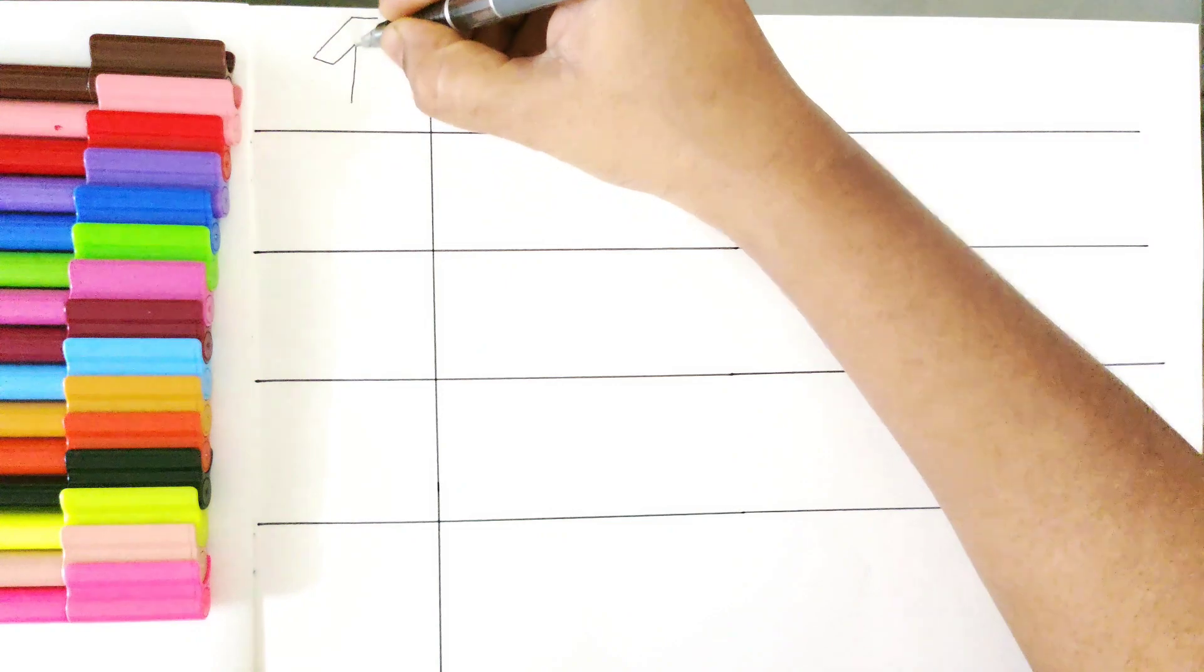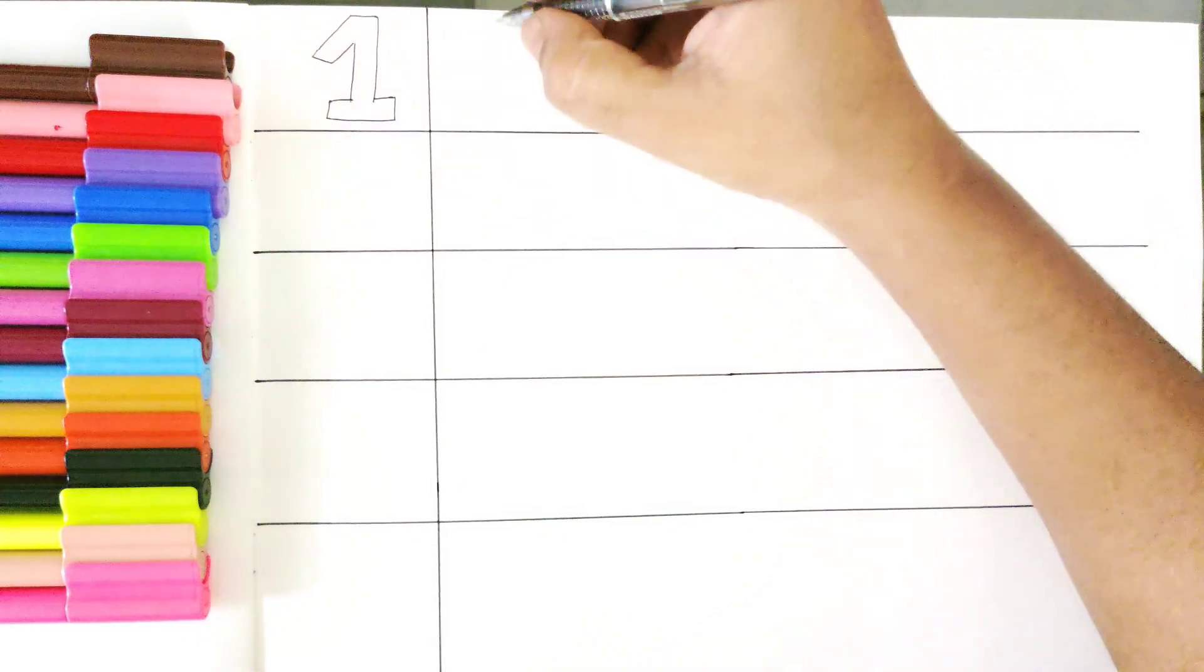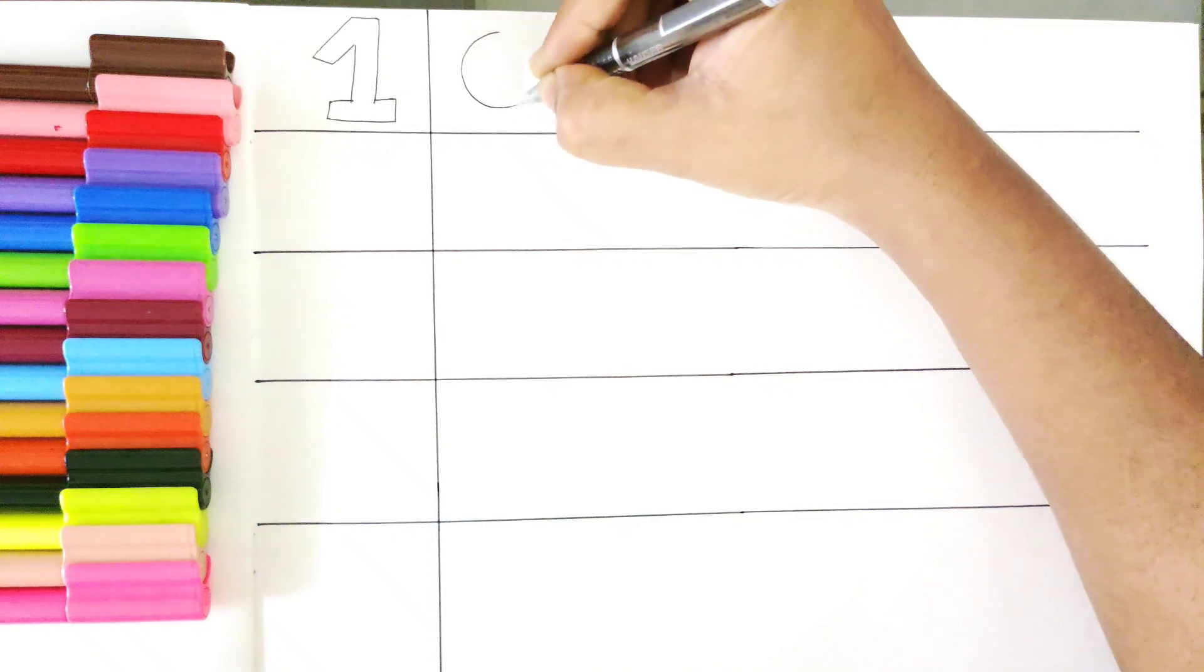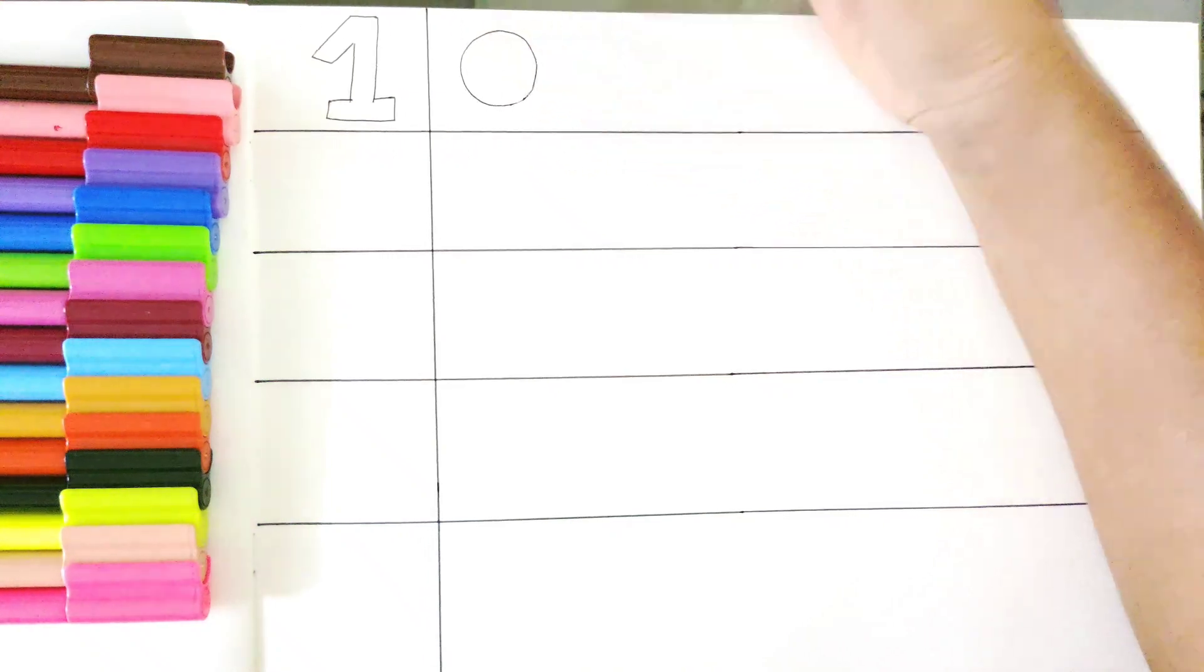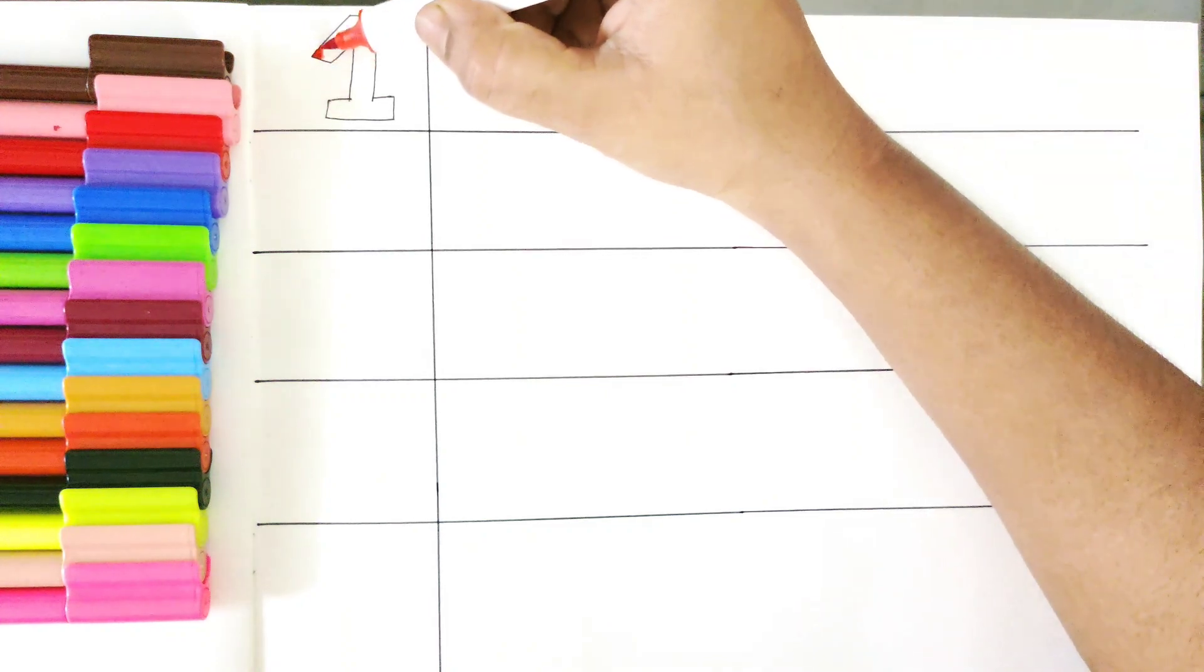We will draw numbers in one column and countings in another. So, we have drawn one and count of balls or circles we are drawing as one.